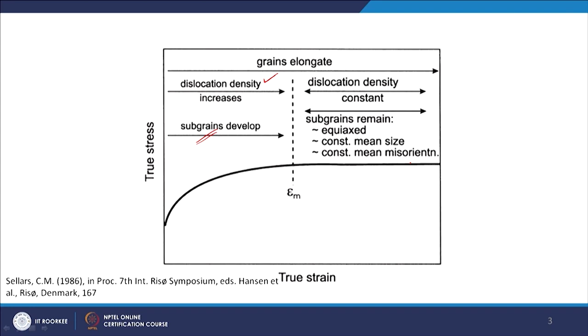In the steady state segment, dislocation density is constant. This happens not because there is no generation, but because dislocation generation and dislocation annihilation rates become equal. Dislocation multiplication and dislocation removal from the grain occur at equal rates, so you do not see any change in flow stress. In the initial process, generation was predominant and annihilation rate was lower — that is why you see the strain hardening.